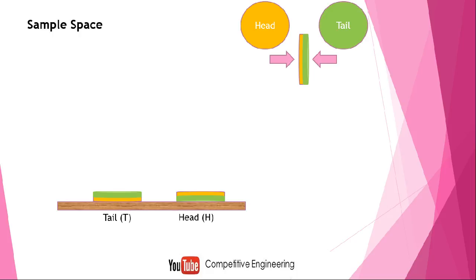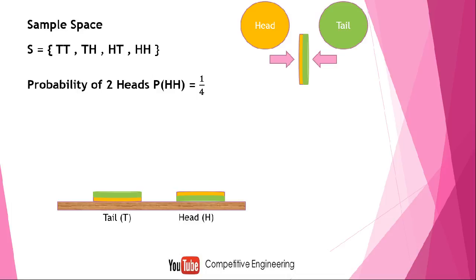There are four possible outcomes, so we write the sample space as: TT (first coin tail, second coin tail), TH (first coin tail, second coin head), HT (first coin head, second coin tail), and HH (both coins head). The sample space size is four. The probability of getting two heads, P(HH), is one divided by four — one out of four outcomes.